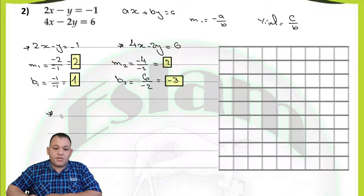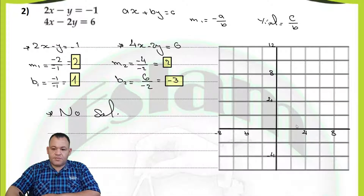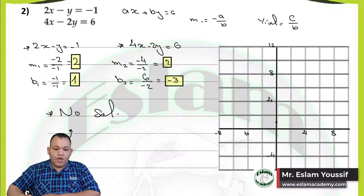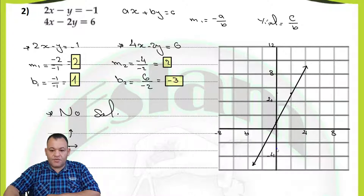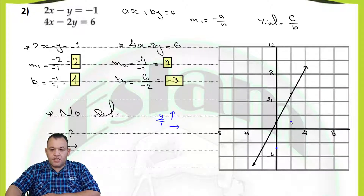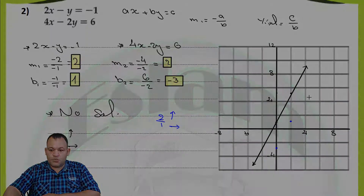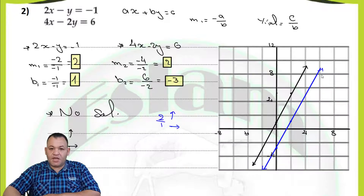The solution for this system is no solution. We can check by graphing. Starting from the y-intercept of 1 for the first line, with slope 2 over 1 — going up 2 and run 1 — we draw line 1. For line 2, starting from y-intercept negative 3, with slope 2 over 1 — going up 2 and run 1 — we draw line 2. Looking at the two lines, you will find they are parallel and will never intersect, confirming there is no solution.